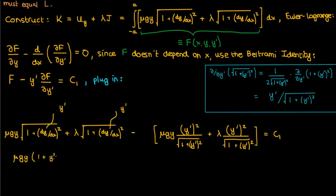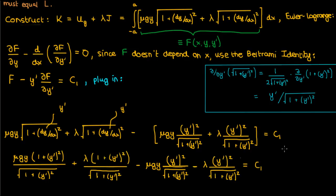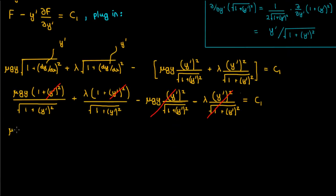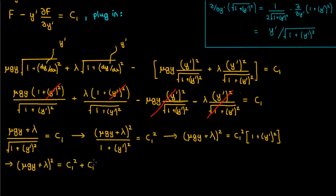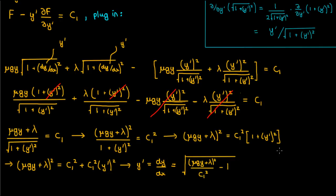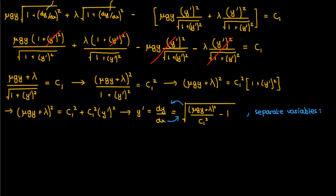Now we square both sides and simplify by isolating y' or dy by dx. We move the denominator to the other side, multiply out c1 squared, and solve for dy by dx. So y' equals the square root of (mu g y plus lambda) squared over c1 squared minus 1. The best way to solve this differential equation is to separate variables — moving all terms involving y to the left and all terms involving x to the right — and then integrate both sides.